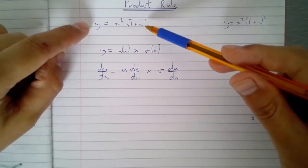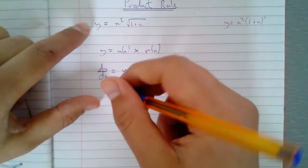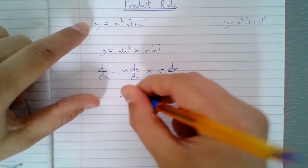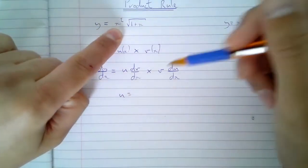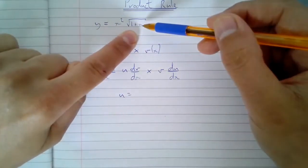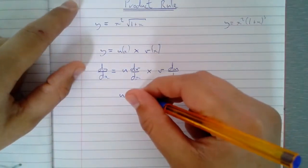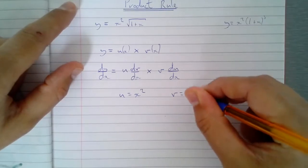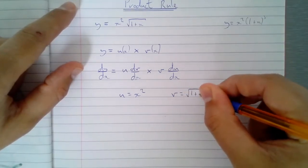So for this here, y equals x squared one plus x all square rooted. I'm going to let u be the x squared. Remember this is about a product of functions. I've got x squared times the square root of one plus x. So I'm going to let u be x squared and I'm going to let v be the square root of one plus x.